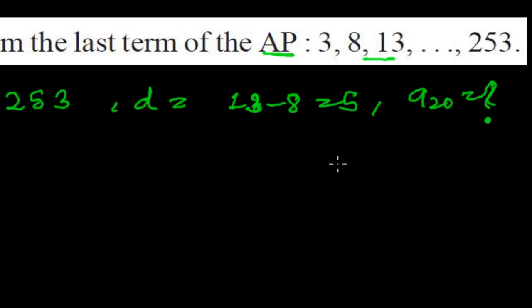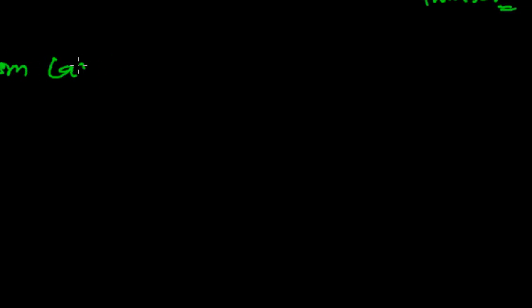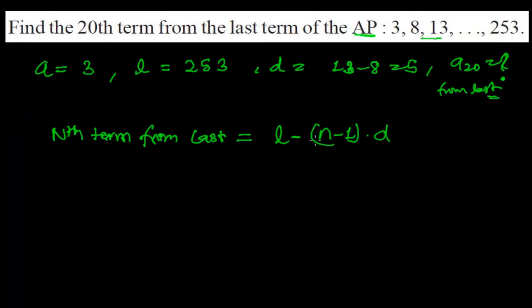We need to find the 20th term from the last. The nth term from the last is given by the formula: L minus (N minus 1) times the common difference d. This is the formula for the nth term from the last.